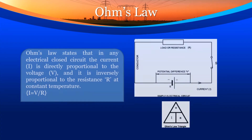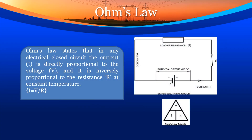Ohm's law states that in any electrical closed circuit, the current, i.e. i, is directly proportional to the voltage V, and it is inversely proportional to the resistance R at constant temperature. Therefore, i is equal to V divided by R.